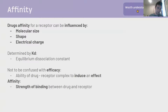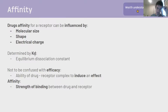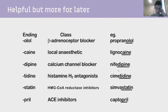What does affinity mean? Affinity is the connection between a drug and a receptor - it's influenced by molecular size, shape, and electrical charge, and is determined by an equilibrium dissociation constant. Affinity should not be confused with efficacy. Affinity refers to the strength of binding between a drug and a receptor. Efficacy is the ability of a drug-receptor complex to induce an effect. The suffixes of drug names can help you realize what class a drug belongs to.